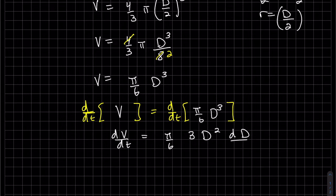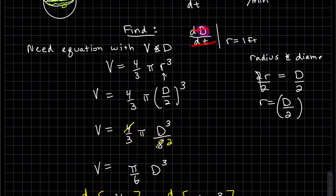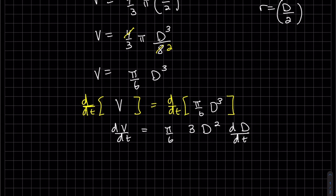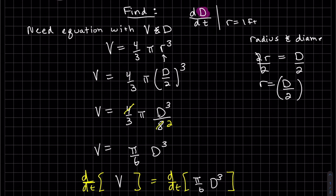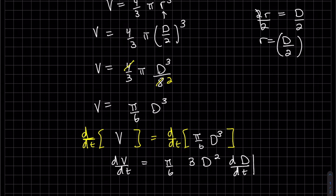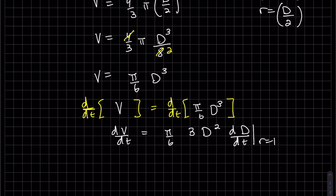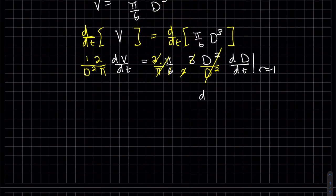Now we take the derivative of both sides in terms of t — in this chapter we always differentiate with respect to time. Using the chain rule: the derivative of D³ is 3D², and then multiplied by dD/dt. We isolate dD/dt by multiplying both sides by 2, then dividing by π and by D².